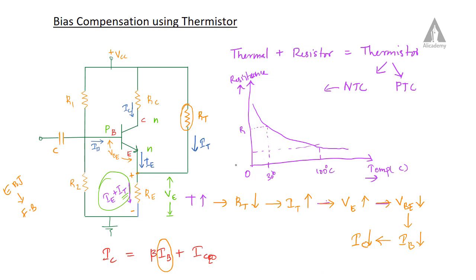When temperature increases, the reverse saturation current ICEO — or beta plus 1 times ICBO — increases, because when temperature increases, minority charge carriers increase. But at the same time, temperature increase causes RT to decrease, IT to increase, VE to increase, VBE to decrease, and IB to decrease, which in turn decreases IC. So ICEO increases but IB decreases, which means IC remains constant.